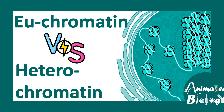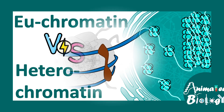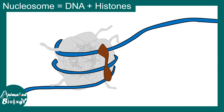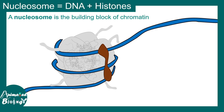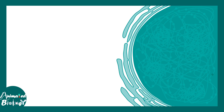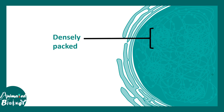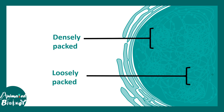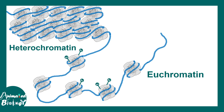In this video we'll talk about the differences between euchromatin and heterochromatin. The building block of chromatin is the nucleosome, which comprises DNA and histones. In a nucleus we find several chromatin domains — densely packed regions known as heterochromatin, and loosely packed regions called euchromatin, which are more accessible.